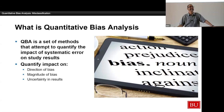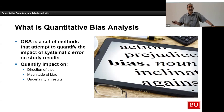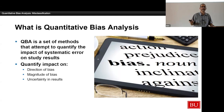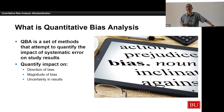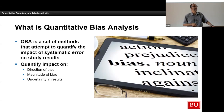Quantitative bias analysis is just a set of methods in which we attempt to quantify the impact of sources of residual systematic error, and we do that in terms of three axes: direction, magnitude, and uncertainty. Direction means: was the bias towards the null or away from the null? Magnitude means: how much? And uncertainty: if I have to account for a source of systematic error analytically — if I didn't prevent it — there should be a penalty. I should always be less certain in my results if I had to account for it analytically than if I had prevented it in the first place.